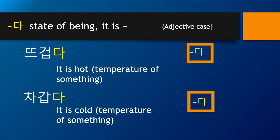The next adjective case: 뜨겁다 and 차갑다. Unlike 덥다 and 춥다, which are used for weather, 뜨겁다 and 차갑다 are used for the temperature of things such as drinking water, tea, coffee, or food. So 뜨겁다 means it is hot, and 차갑다 means it is cold.